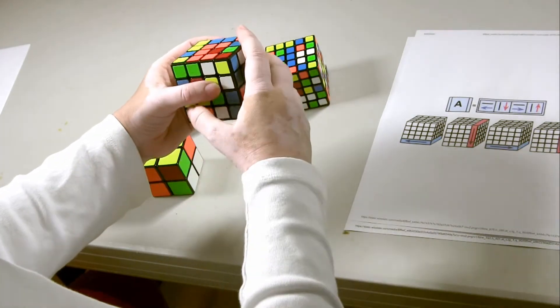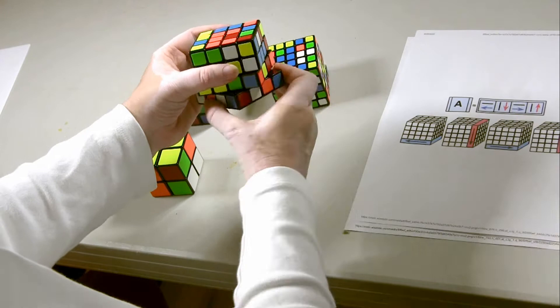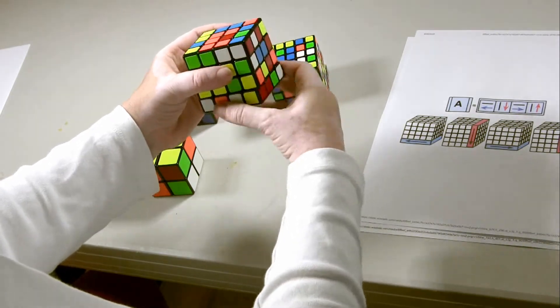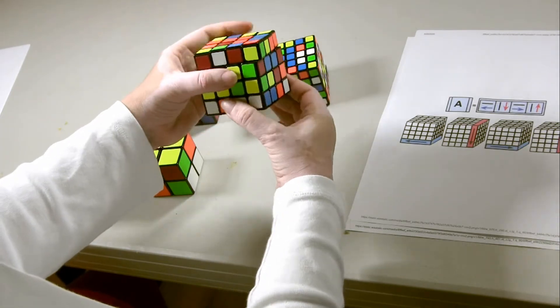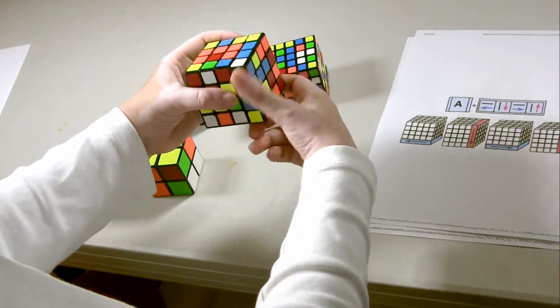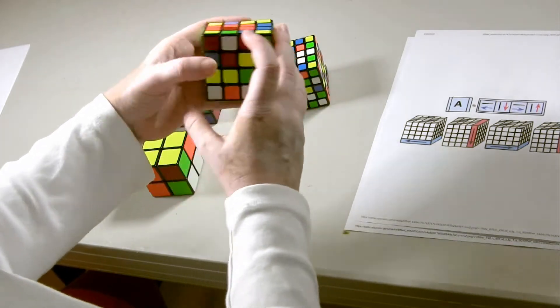Rotate the top, keep the cube stable. Out, down, in, up. Out, down, in, up. Rotate the top, keep the cube stable. Out, down, in, up. Out, down, in, up. And now, as we look at it...